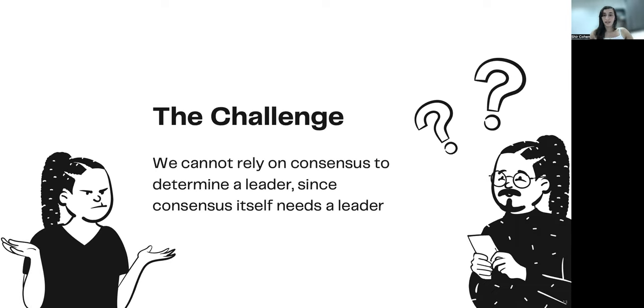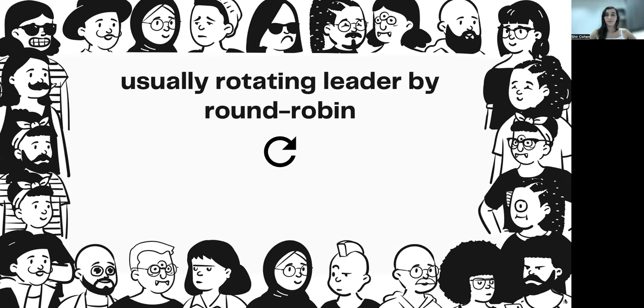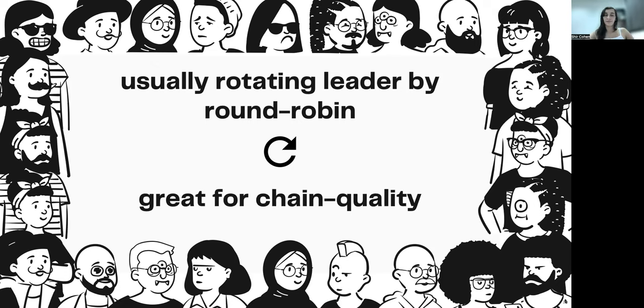So how does one rotate a leader? In this work, we seek for a leader election mechanism. The challenge is to do so without relying on consensus to agree upon the next leader, since consensus itself requires a leader. Let's start with the straightforward solution. Well, usually systems use round-robin mechanism. Each block is proposed by the next in line party.